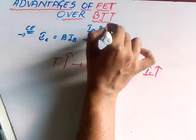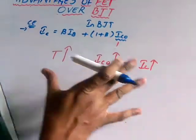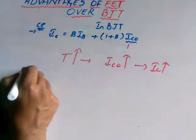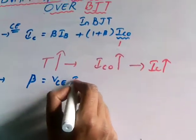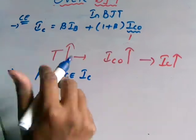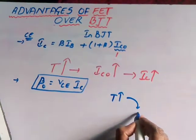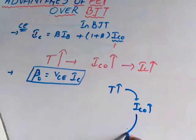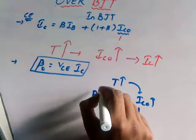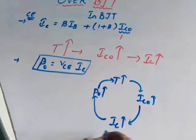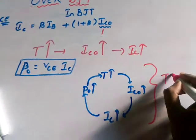In BJT, it is having a positive temperature coefficient — as temperature increases, IC simply increases. If you consider the power dissipated by BJT, it is calculated as VCE times IC. So as temperature increases, IC0 increases; as IC0 increases, IC increases; as IC increases, the power dissipated by BJT increases, so obviously temperature increases further. This is a cumulative process, and by this process the BJT enters into a problem called thermal runaway.